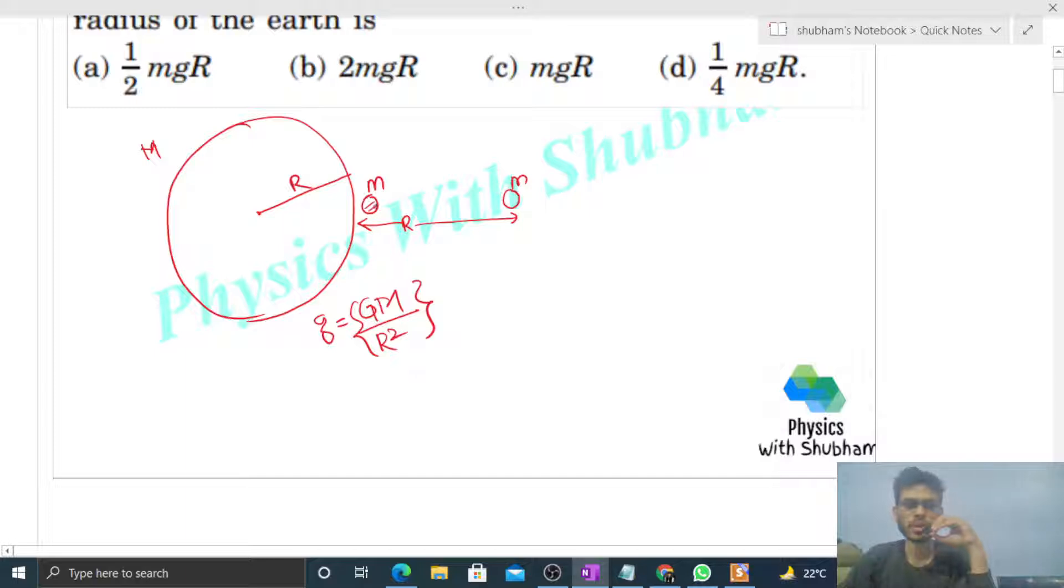Now when we lift this object we have to apply an external force. Let's say at any instant t the position of this object is at any general position, at a distance x from the center of the earth. The distance of this object from the center of the earth is x at any general time t. Now a gravitational force of attraction will act on this object.